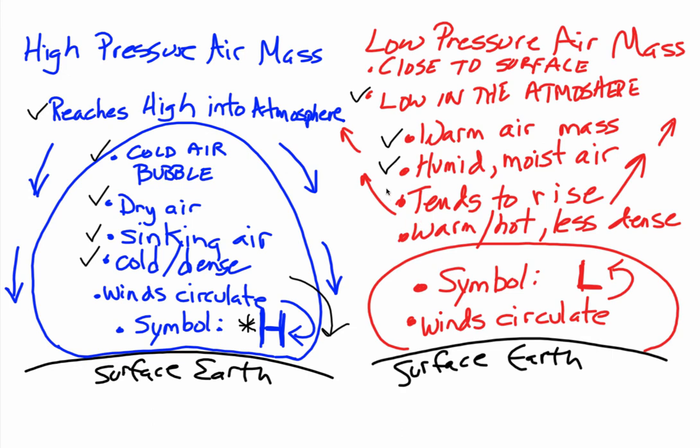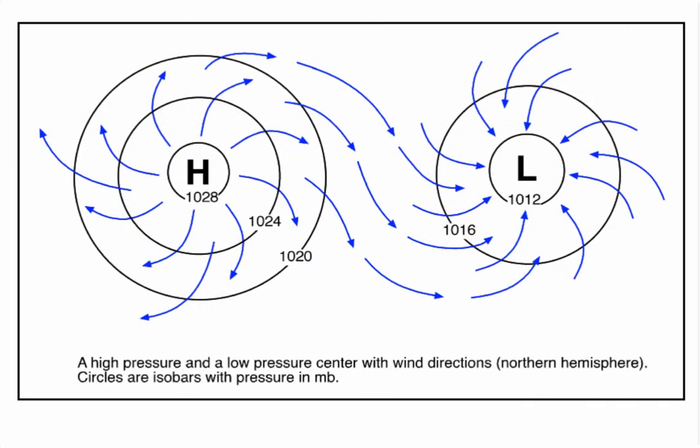These pressure systems tend to rise in the atmosphere because they're warmer, hotter, and less dense air molecules. We use a symbol uppercase L on a weather map to denote the center of a low-pressure system. Winds around or within a low-pressure system circulate counterclockwise in the northern hemisphere.